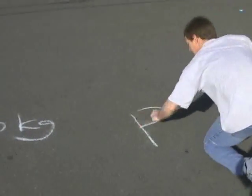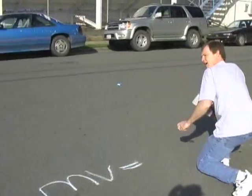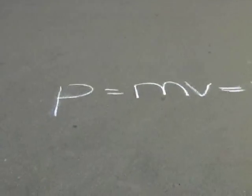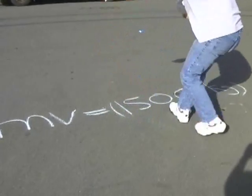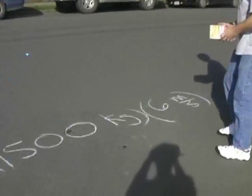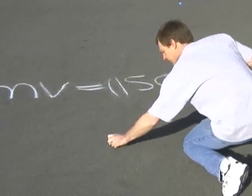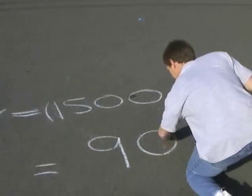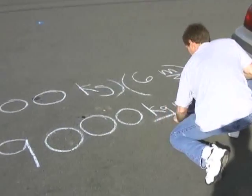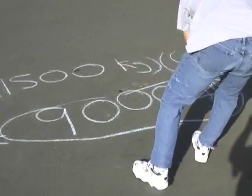The momentum is mass times velocity, which is going to be about 1,500 kilograms times 6 meters per second. Check out the units — I've got mass, I've got velocity, kilograms times meters per second. That's going to be 9,000 kilogram meters per second. Make sure you can do that.